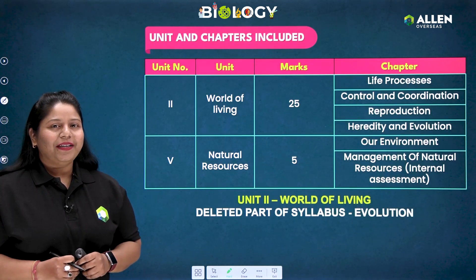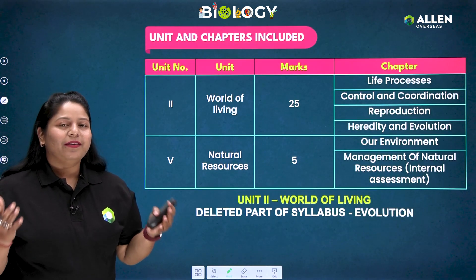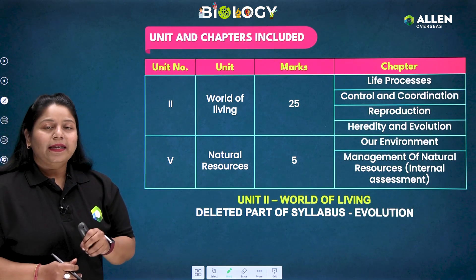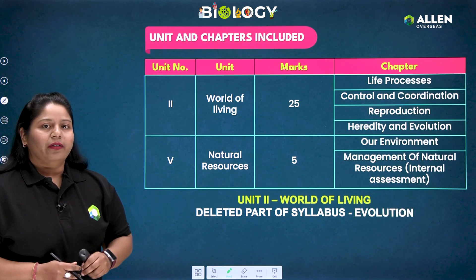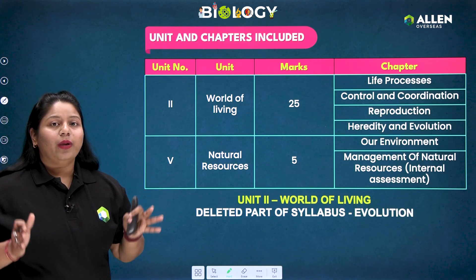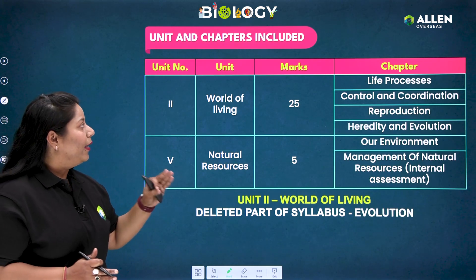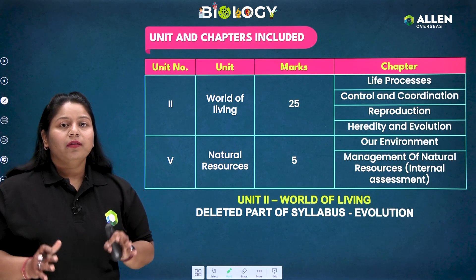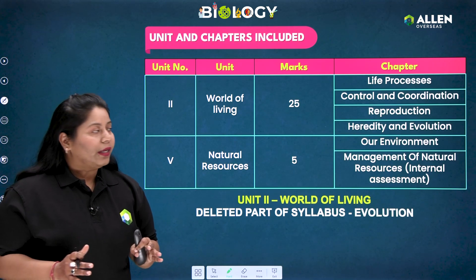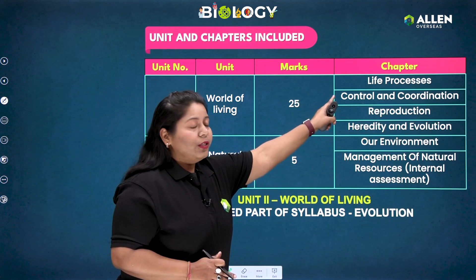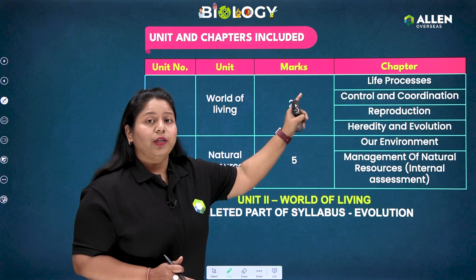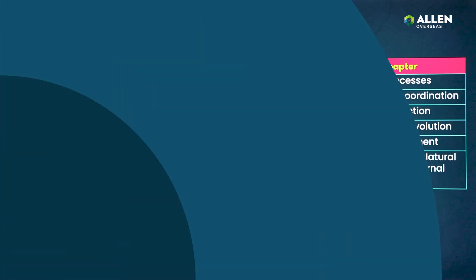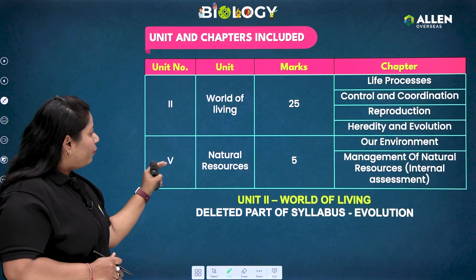When we are dealing with this, the very important part is our syllabus. We have Unit Number 2, that is 'World of Living,' and it has the highest weightage in the paper — total 25 marks. Questions are coming from this unit, and it includes life processes, control and coordination, reproduction, and heredity and evolution.